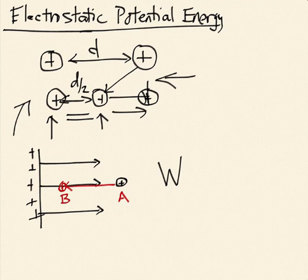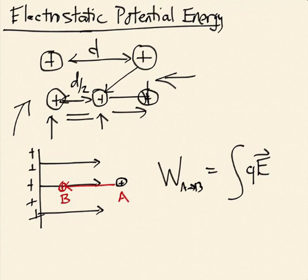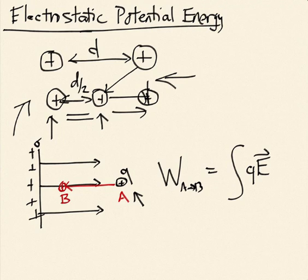The work done by the electric field going from A to B is written as the integral of the force, which is QE, where E is the electric field generated by the sheet charge and Q is the point charge. The electric field E equals sigma over 2 epsilon-naught for a sheet with charge density sigma. To get the work done moving over the path, I integrate QE dot dL, where dL is a small vector element along the path. I've chosen a straight path, but I can choose any path I like.